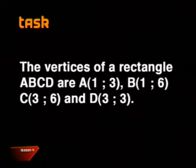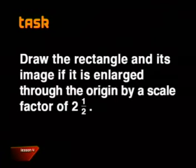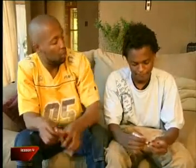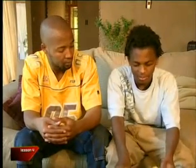The vertices of a rectangle ABCD are A(1, 3), B(1, 6), C(3, 6), and D(3, 3). Draw the rectangle and its image if it is enlarged through the origin by a scale factor of 2 and a half. I hope you enjoyed working with coordinate and transformation geometry. Yes, it was great, but I have to go now, otherwise I will miss my taxi. Thank you.